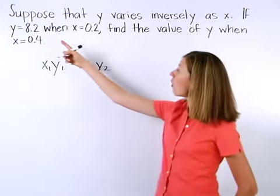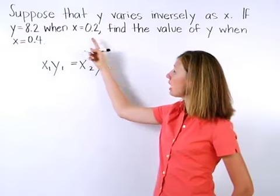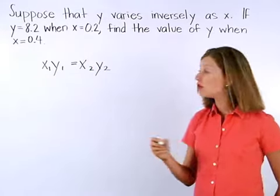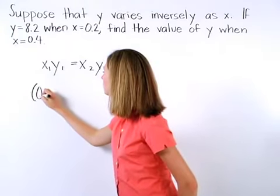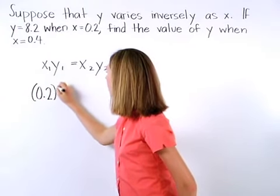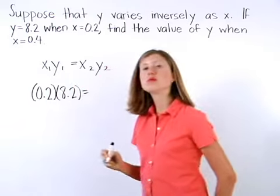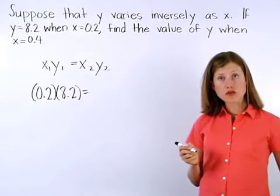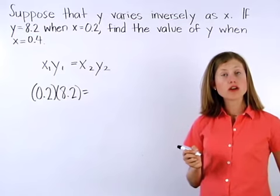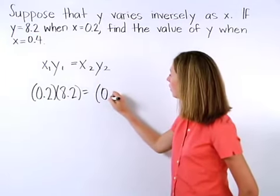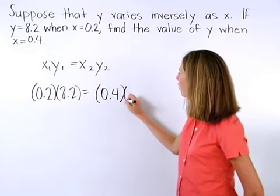Here, we know that y equals 8.2 when x equals 0.2, so one set of coordinates will be 0.2 and 8.2. We want to know the value of y when x is equal to 0.4, so our other coordinates will be 0.4 and y.